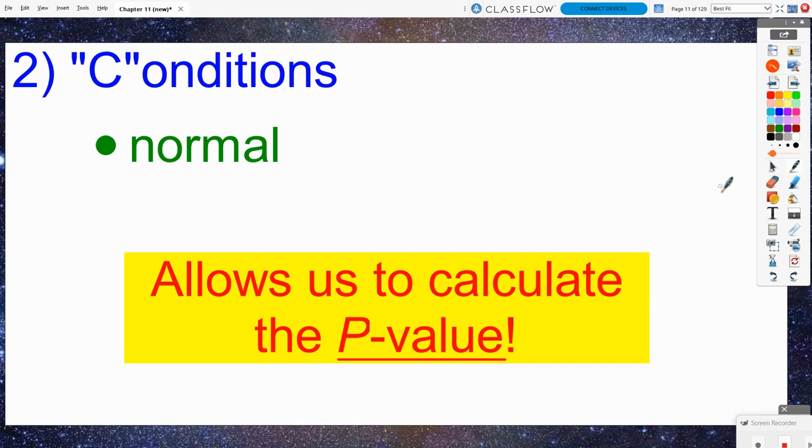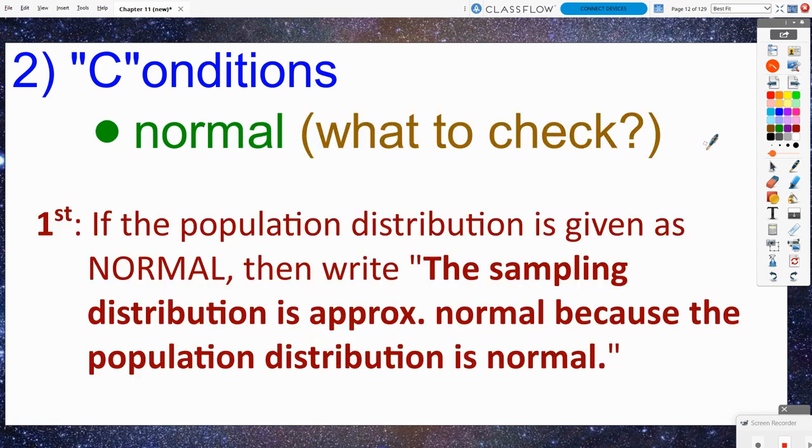Now, the normal condition is going to allow us to calculate that p-value, and we're going to use a different calculator command this time around. We're not going to use normal CDF like we did with proportions. We're going to have to use its T distribution cousin, TCDF. There are three situations, and it's the same three that we are going to discuss this chapter. I always look at these in this specific order. First, if the population just happens to be given to you as normal or approximately normal, then all you have to state is the sampling distribution is approximately normal because the population distribution is also normal or approximately normal. It's not going to be often that they're going to tell you this information, but when it does happen, it's a really easy check.